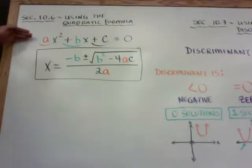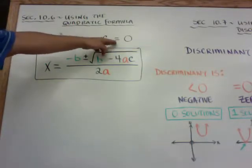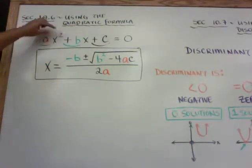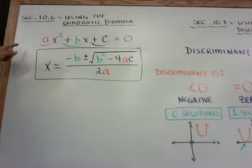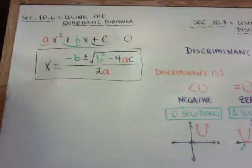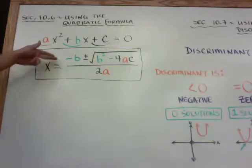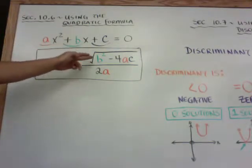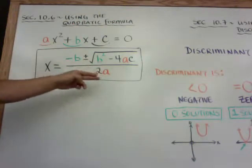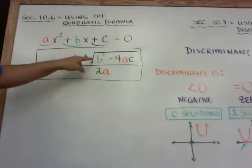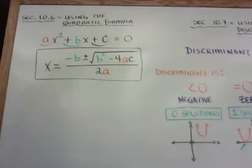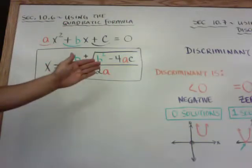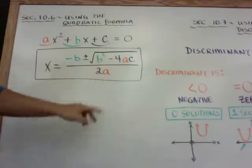The first thing you need to do is put it into standard form, make it equal to zero, line it up, and you have a, b, and c. Make sure you take the sign of each one along with the number. Here's the quadratic formula: x equals negative b plus or minus the square root of b squared minus 4ac, all over 2a. The discriminant is what's under the radical — the b squared minus 4ac. Another name for what's under the radical is called the radicand, but in this case, because it's under the quadratic formula, we call it the discriminant.